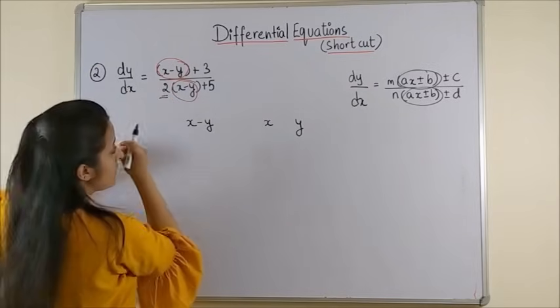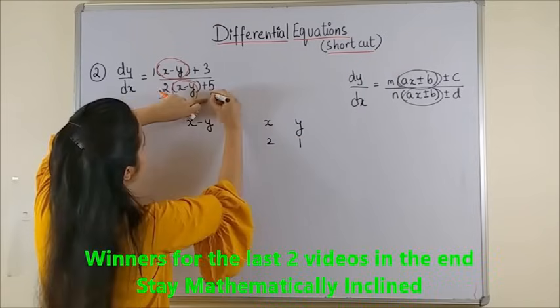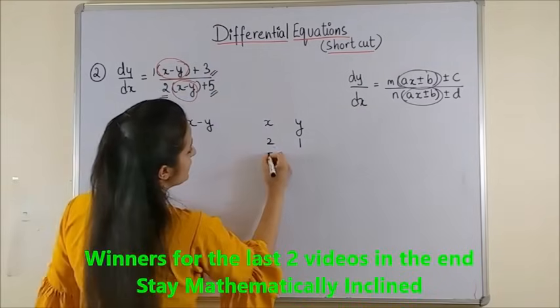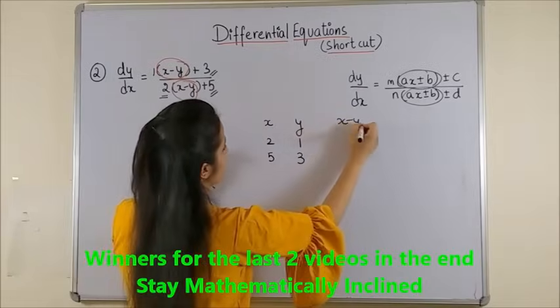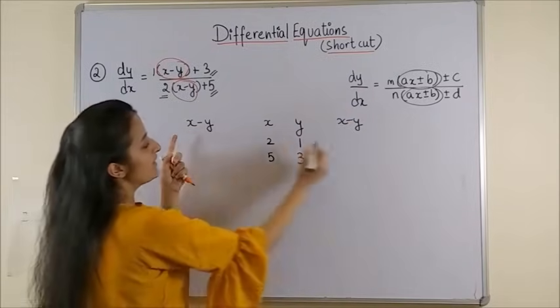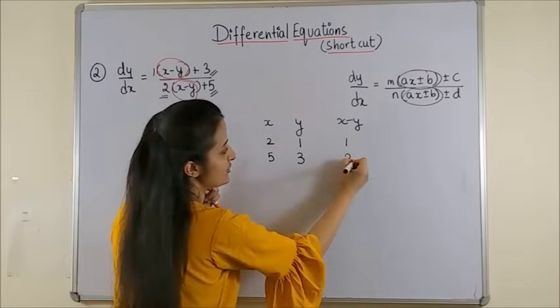So, this is 2, this is 1. So, we write it here. And x is 5 and 3. So, we write that here. Now, this is simply x minus y. The next one would be 2 minus 1. That is 1. The next would be 5 minus 3. That is 2. That's all you need to do.